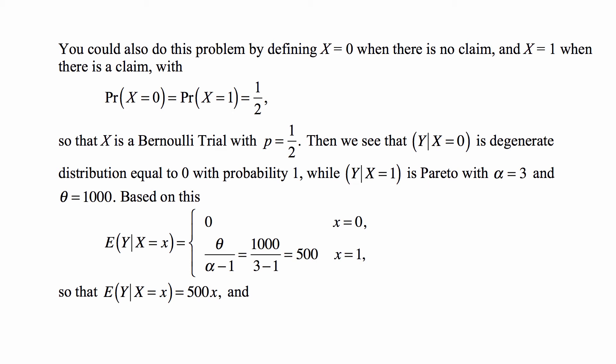Based on this, E(Y|X=x) is 0 when X = 0 and 500 when X = 1. So E(Y|X=x) could be written as 500X.